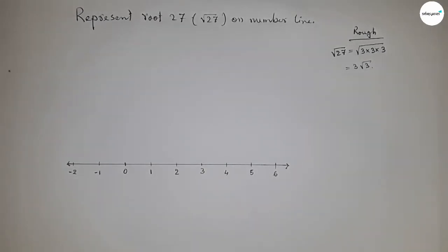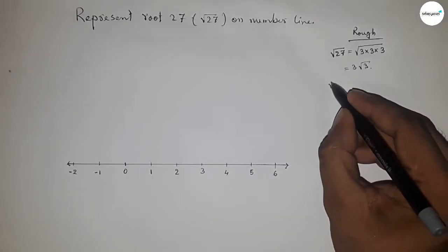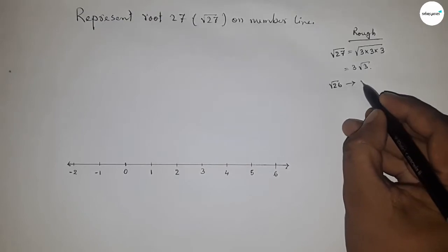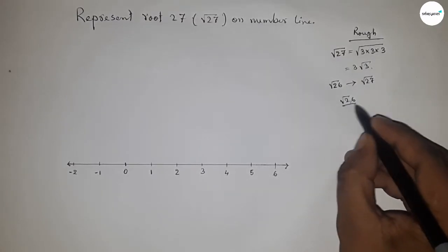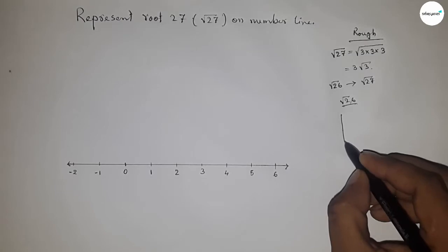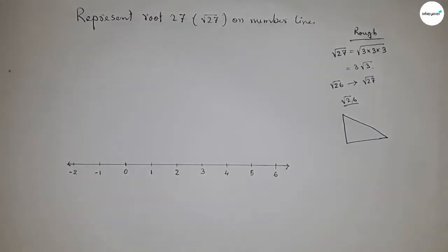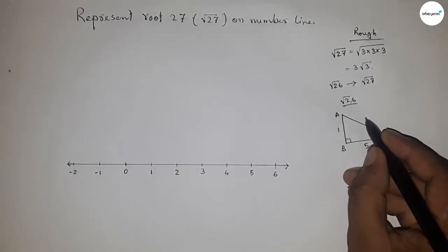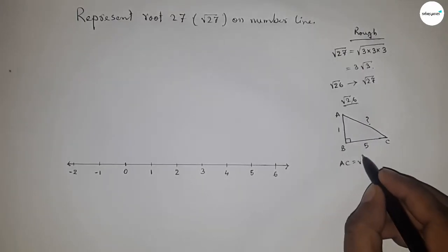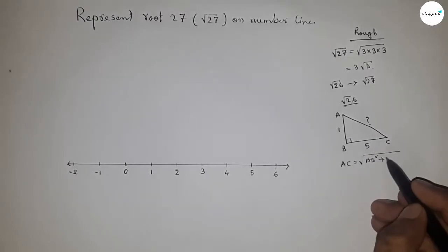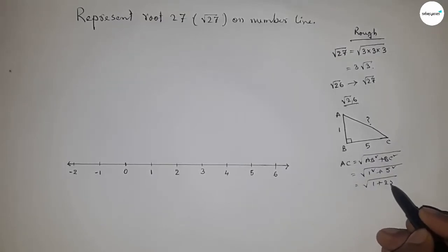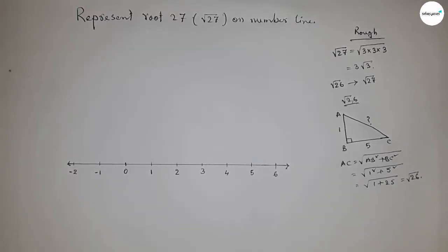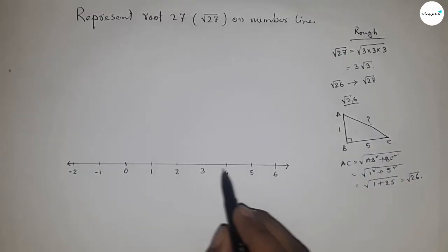To represent root 27, we first need to construct root 26 on the number line. For root 26, consider a right angle triangle ABC with base 5 and height 1. By Pythagoras theorem, the hypotenuse equals root of base squared plus height squared, which is root of 25 plus 1, giving root 26 units.